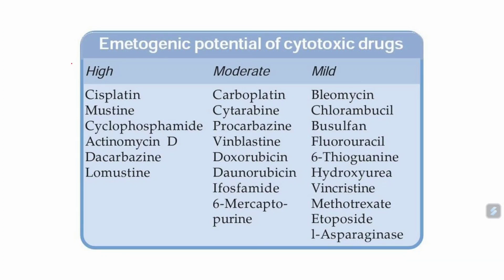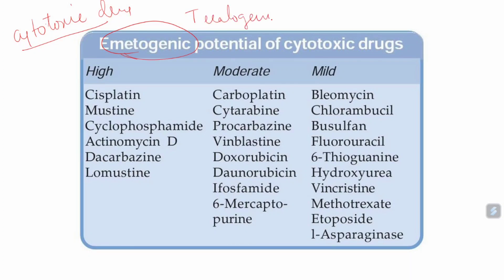Another important point: all cytotoxic drugs have emetogenic and teratogenic properties. Methotrexate is listed as a mild teratogenic drug. Teratogenicity means when these drugs are given to pregnant women, they cause dysfunction, deformation, or abnormal formation of the fetus — such as phocomelia or other malformations.